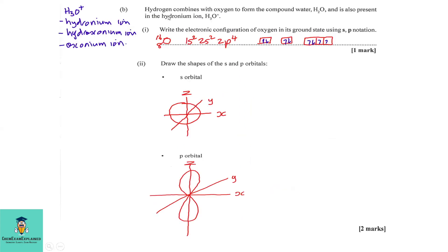Part B. Hydrogen combines with oxygen to form the compound water and is also present in the hydronium ion H3O+. So, what I'm doing here on the side is just to show you that H3O+ can be called hydronium ion, hydroxonium ion, and oxonium ion.